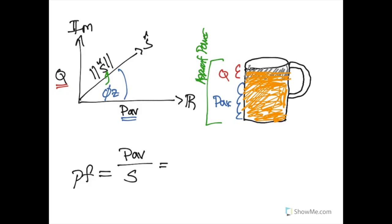This can also be expressed directly from our phase angle, the phi of Z, which is the relationship between V and I. Typically in a real system, you want this power factor to be one.